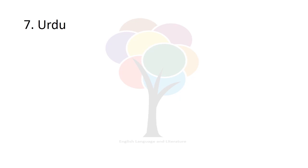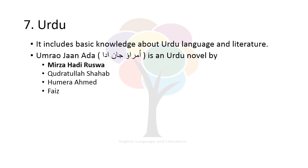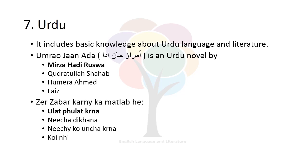The seventh module of general ability is Urdu. It includes basic knowledge about Urdu language and literature. For example, you may be asked: 'Umrao Jaan Ada is an Urdu novel by whom?' — Mirza Hadi Ruswa, Qudratullah Shahab, Humaira Ahmed, or Faiz. The right option is Mirza Hadi Ruswa. Mirza Hadi Ruswa has written the Urdu novel Umrao Jaan Ada. Or you may be asked: 'What is the meaning of Zair Zabar Karna?' — the answer is ulat pulat karna (to turn upside down / to shuffle).